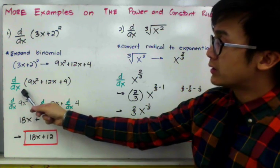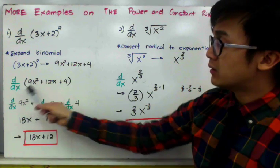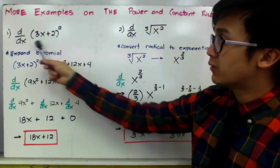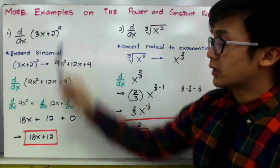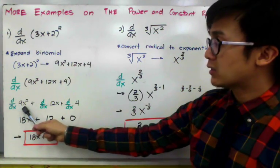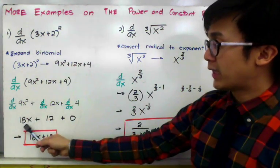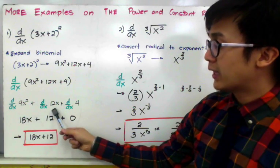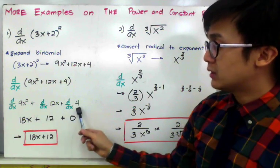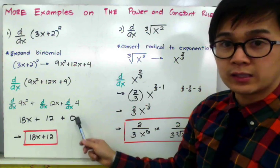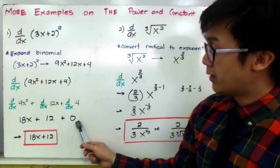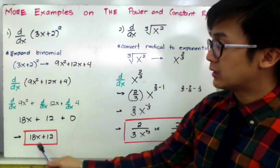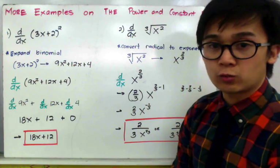We find the derivative of each term of our polynomial. The derivative of 9x squared is equal to 18x, the derivative of 12x in terms of x is 12, and the derivative of 4, which is a constant, is equal to 0. Therefore, the derivative of our function is equal to 18x plus 12.